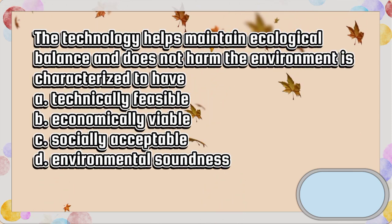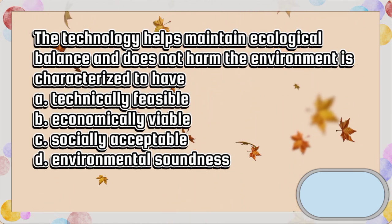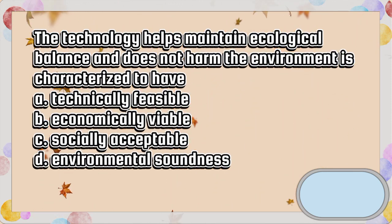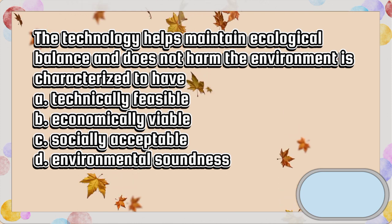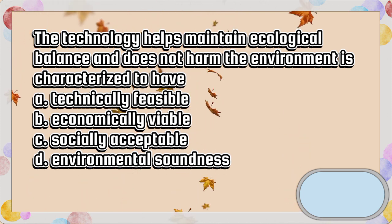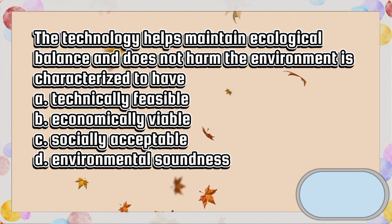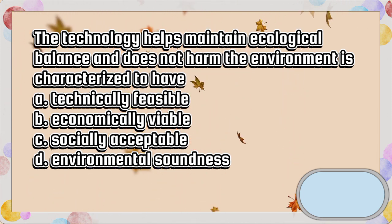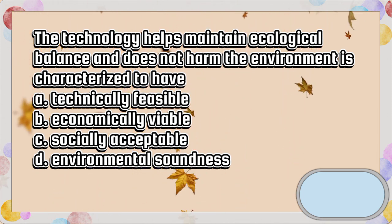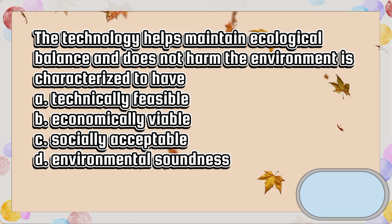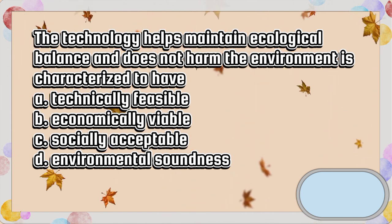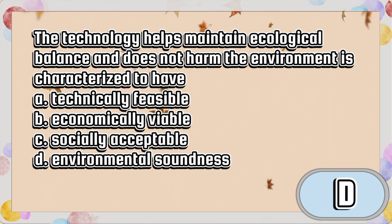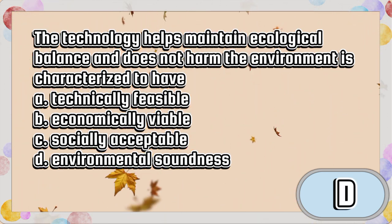The technology that helps maintain ecological balance and does not harm the environment is characterized to have: A. Technically feasible. B. Economically viable. C. Socially acceptable. D. Environmental soundness. The answer is letter D.